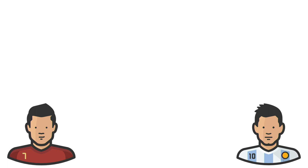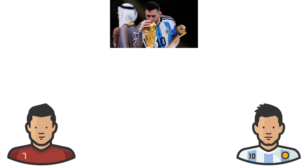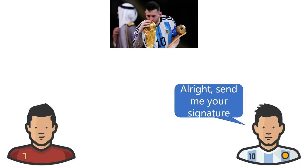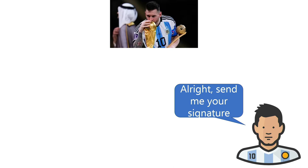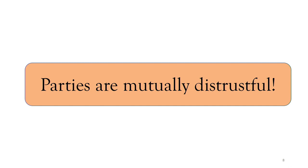The World Cup final happens and Argentina wins. Messi says, 'Alright, send me your signature.' At this point, Ronaldo just says bye and disappears. This is a mutually distrustful problem: if Messi received the signature before the outcome, he could post it and take the money without winning; but if he waits for the outcome, Ronaldo can simply not send the signature.